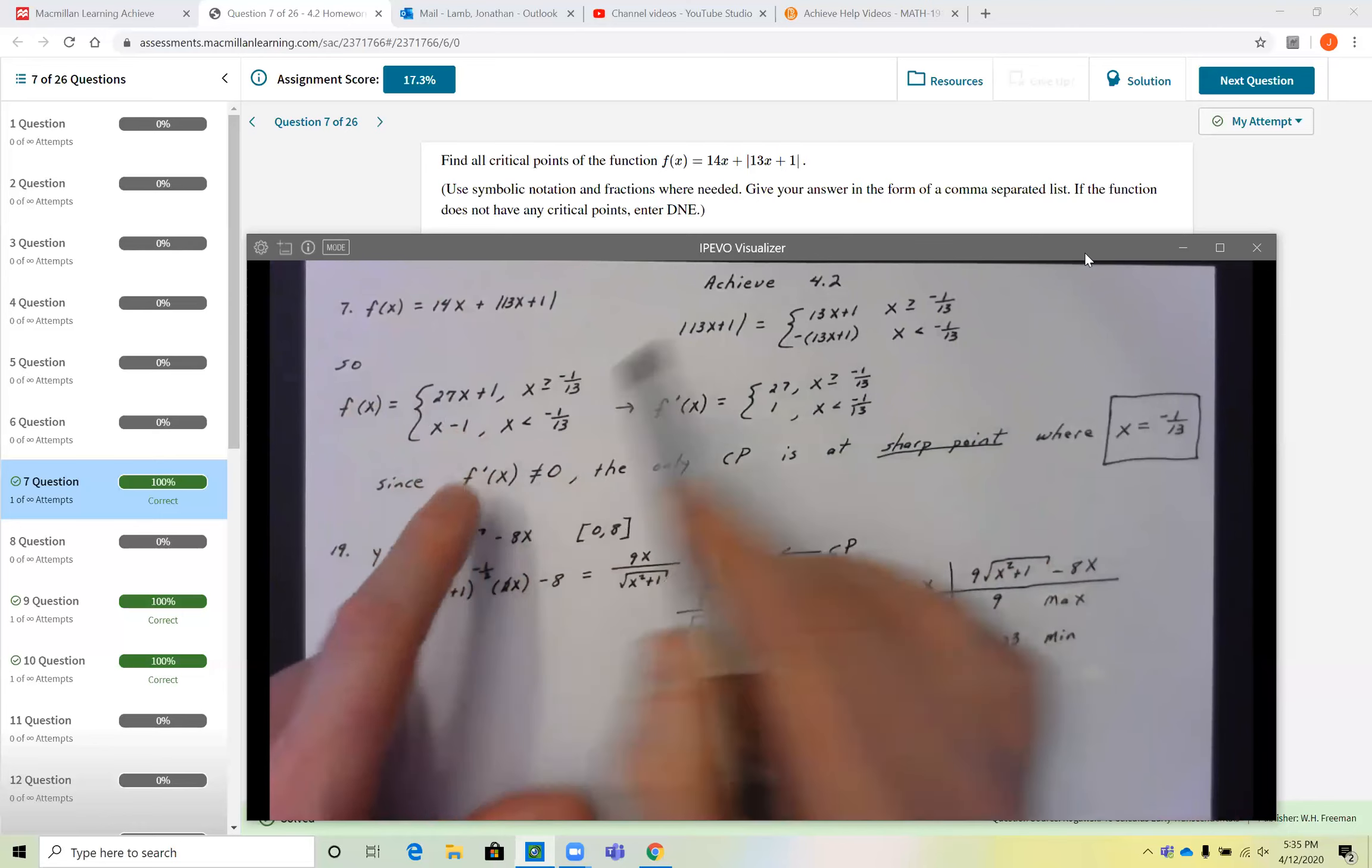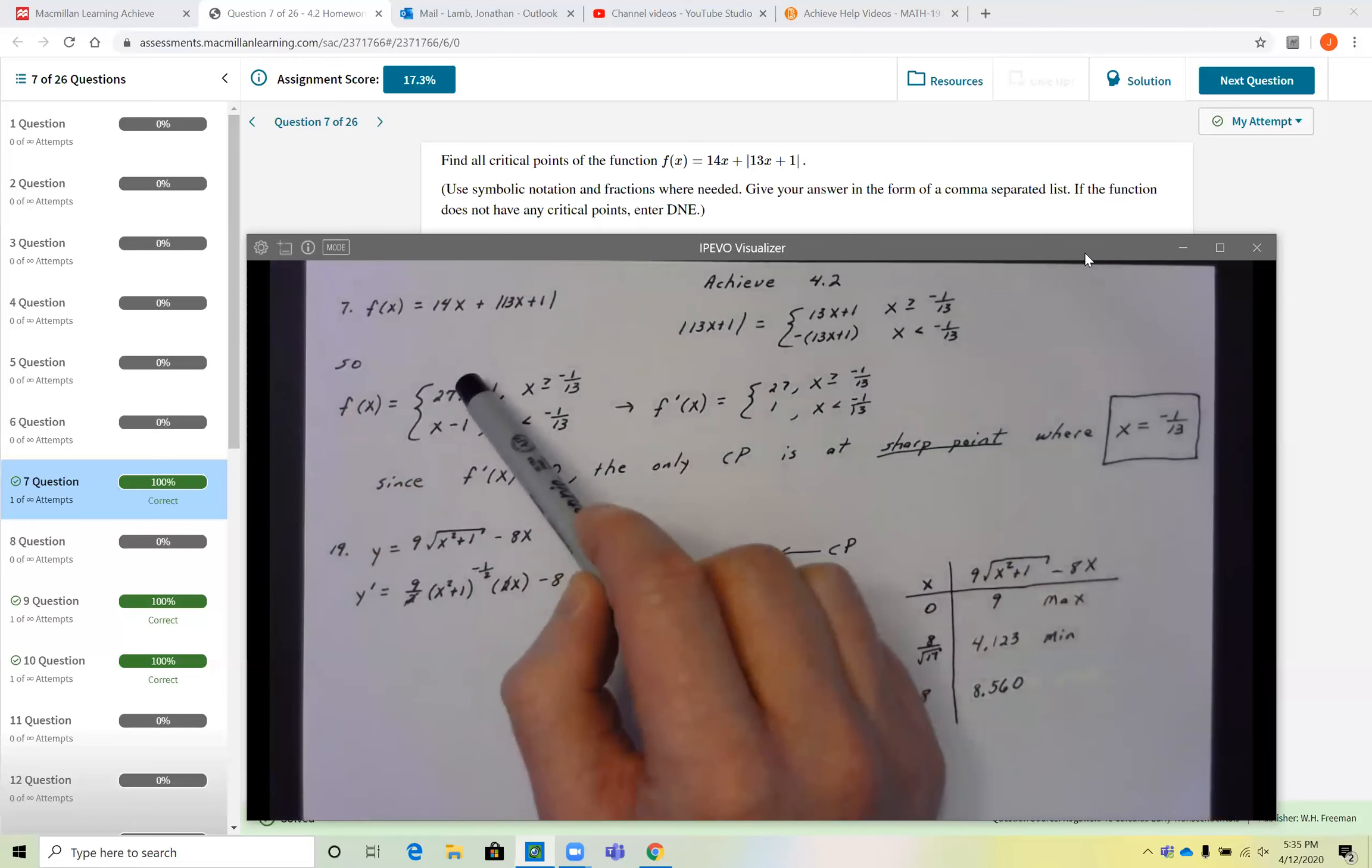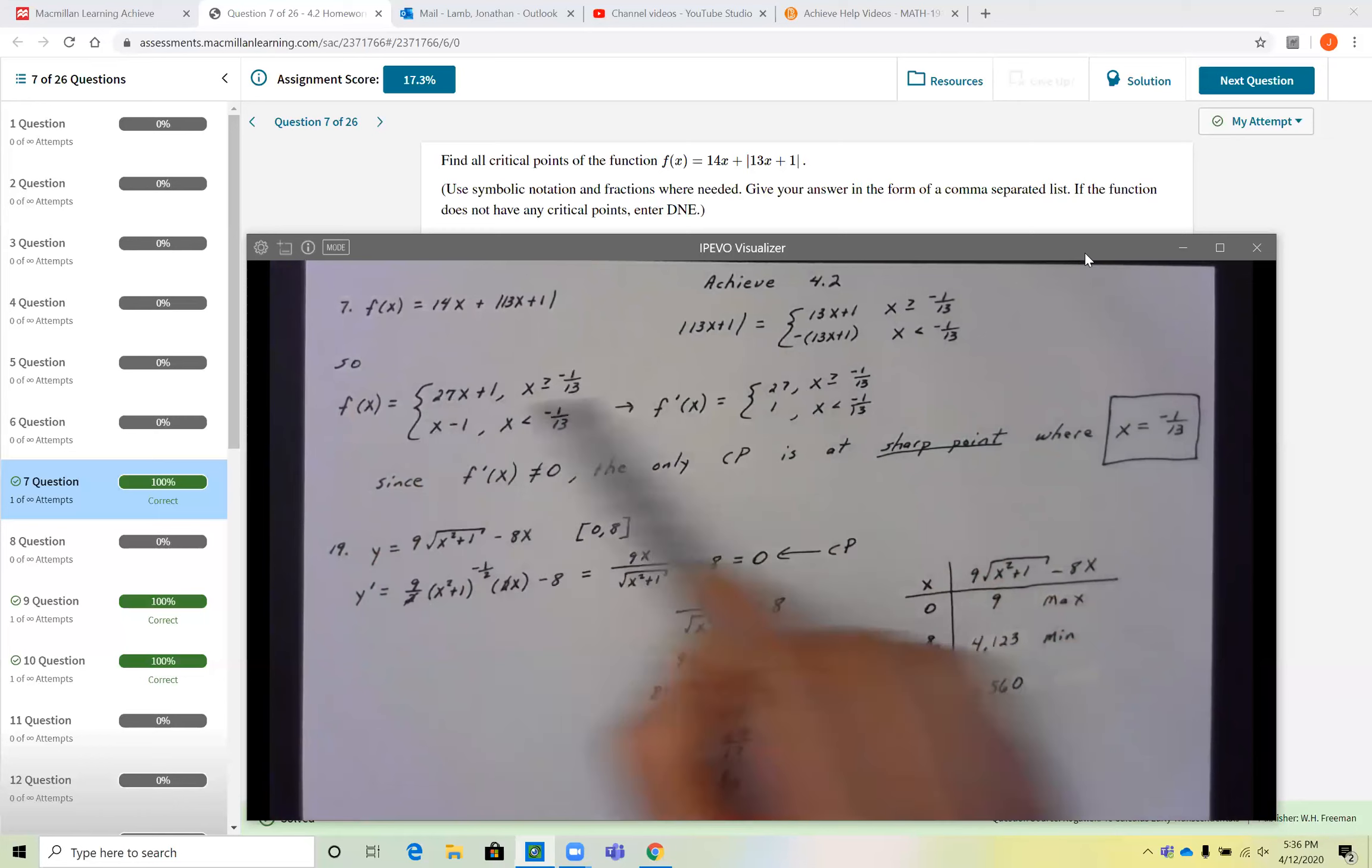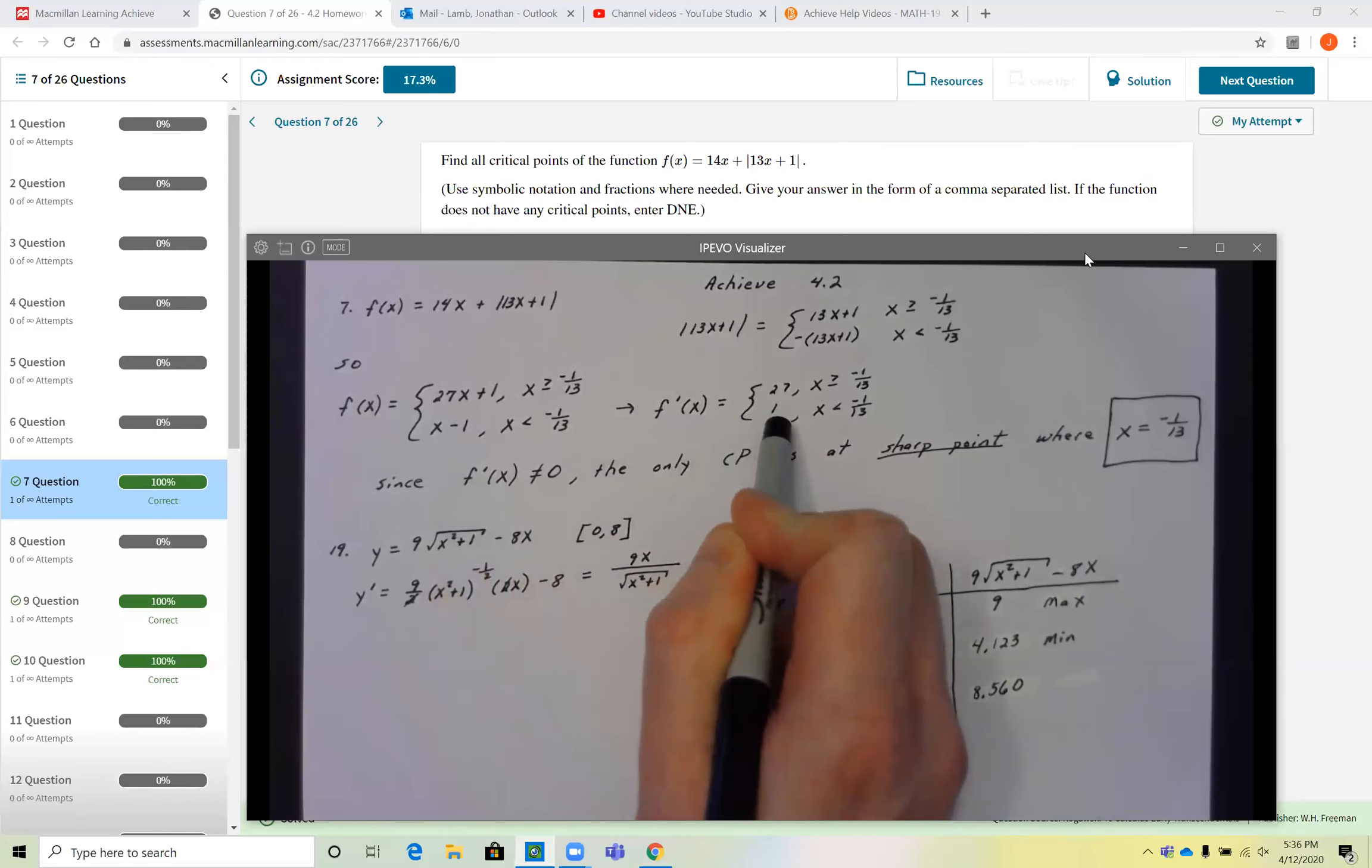Now in either scenario, it really ends up not mattering for the critical points because I know both of these are linear functions. So the derivatives are merely constants. The derivative of 27x plus 1 is 27. The derivative of x minus 1 is 1. Neither one of those could ever equal zero. So you're not going to get any critical points the normal way. Normally we get critical points by setting the derivative equal to zero. This derivative can never equal zero.